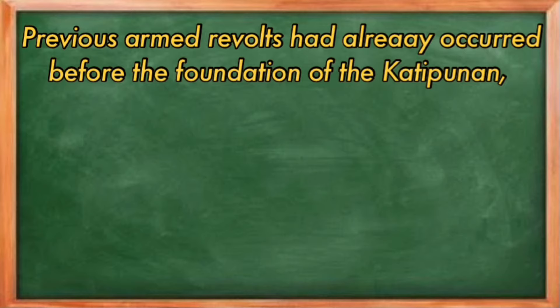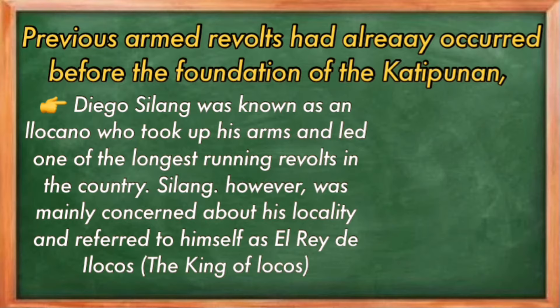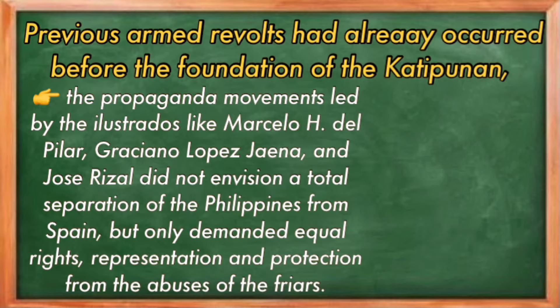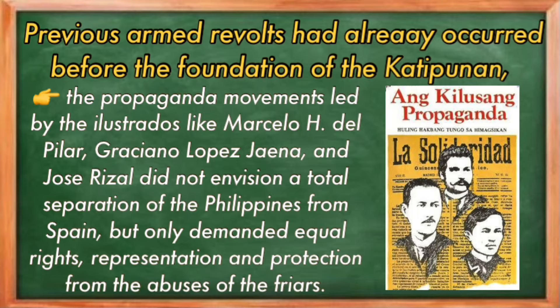Previous armed revolts had already occurred before the foundation of the Katipunan, but none of them envisioned a united Filipino nation revolting against the colonizers. For example, Diego Silang was an Ilocano who took up arms and led one of the longest-running revolts in the country. However, Silang was mainly concerned about his locality and referred to himself as El Rey de Ilocos, or the King of Ilocos.